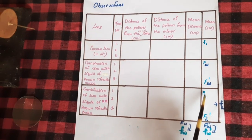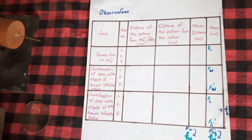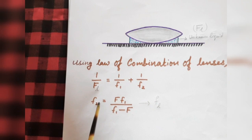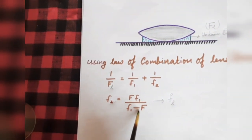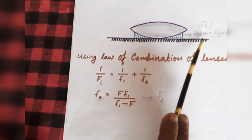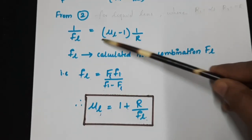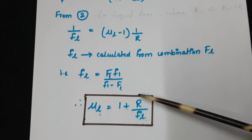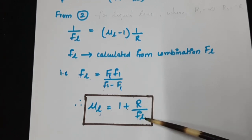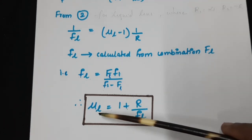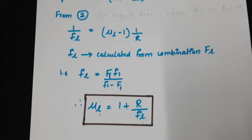From these values we can evaluate the combined focal length FL, and from that the focal length of this new liquid lens: fl = f·f1 / (f1 - f), where fl is the focal length of the unknown liquid combination. On rearranging, μl = 1 + R/fl, where fl is the liquid focal length and μl is the refractive index of the liquid. So both our aims are accomplished. To conclude this liquid lens experiment: we used a known refractive index liquid to find out the radius of curvature, and using that we evaluated the refractive index of an unknown liquid.